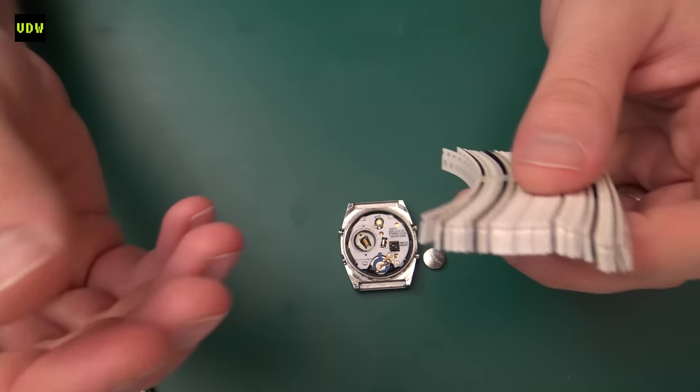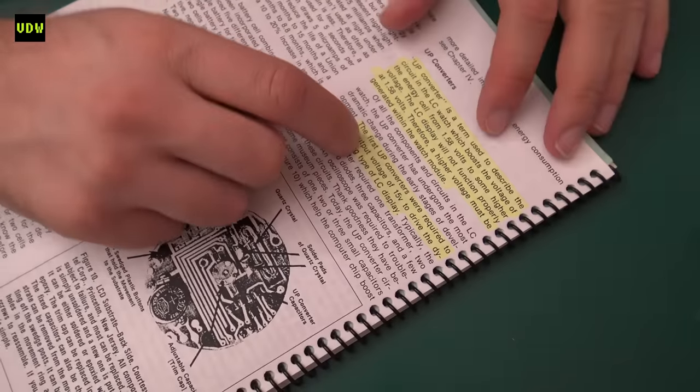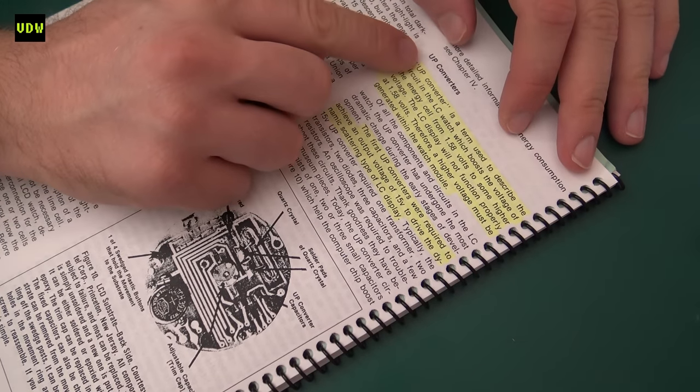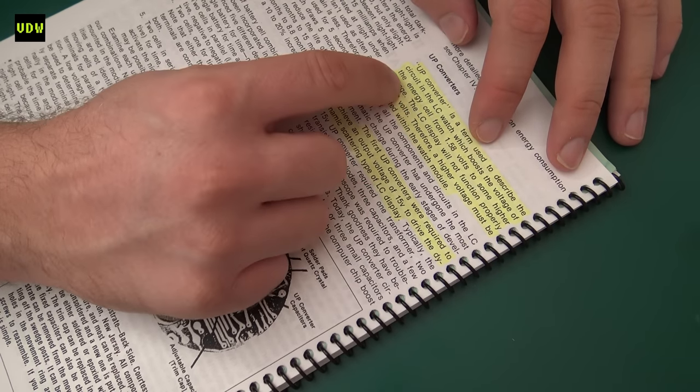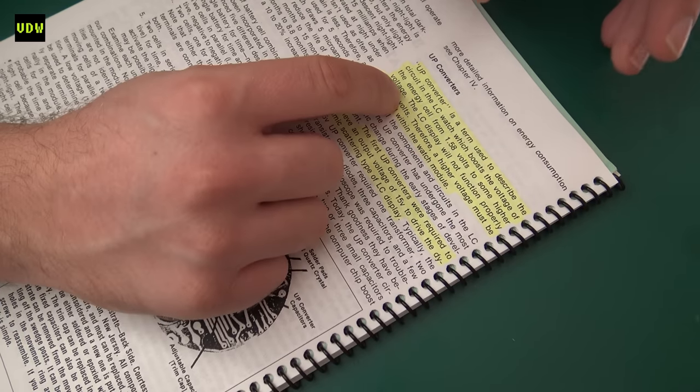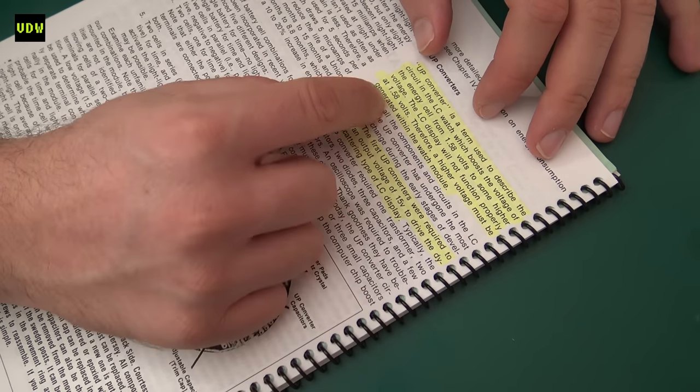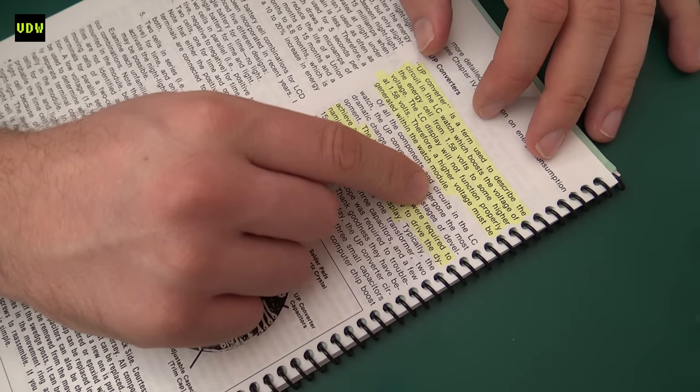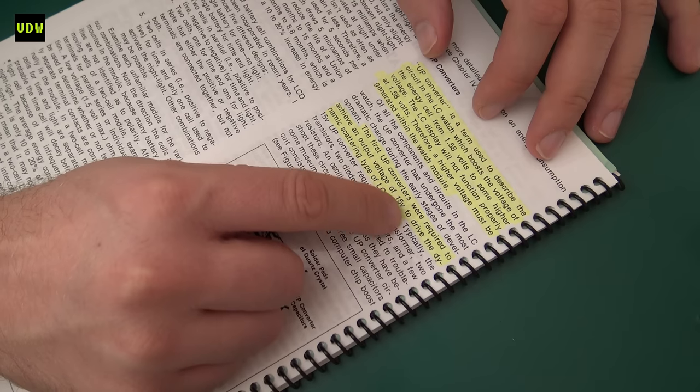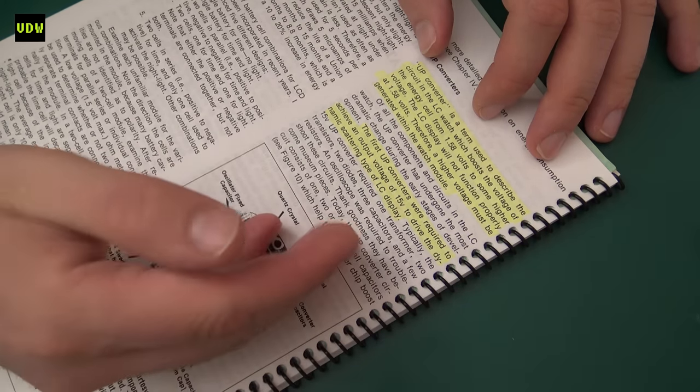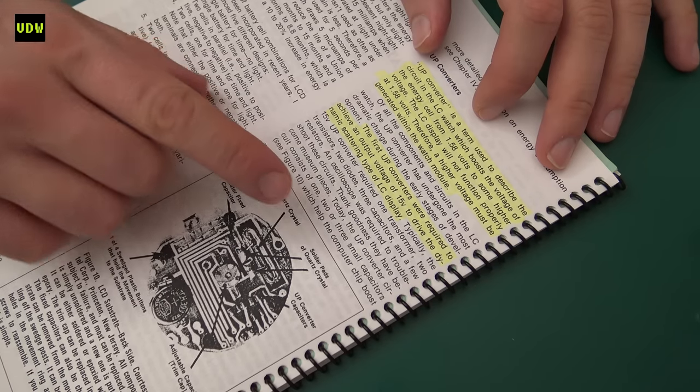If we pull out the trusty Google watch repair manual, it says right here: up converter is a term used to describe the circuit in the liquid crystal watch which boosts the voltage of the energy cell from 1.58 volts to some higher voltage. The LCD display will not function properly at 1.5 volts, therefore a higher voltage must be generated within the watch module. The first top converters were required to achieve an output voltage of 15 volts to drive the dynamic scattering type of LC display.